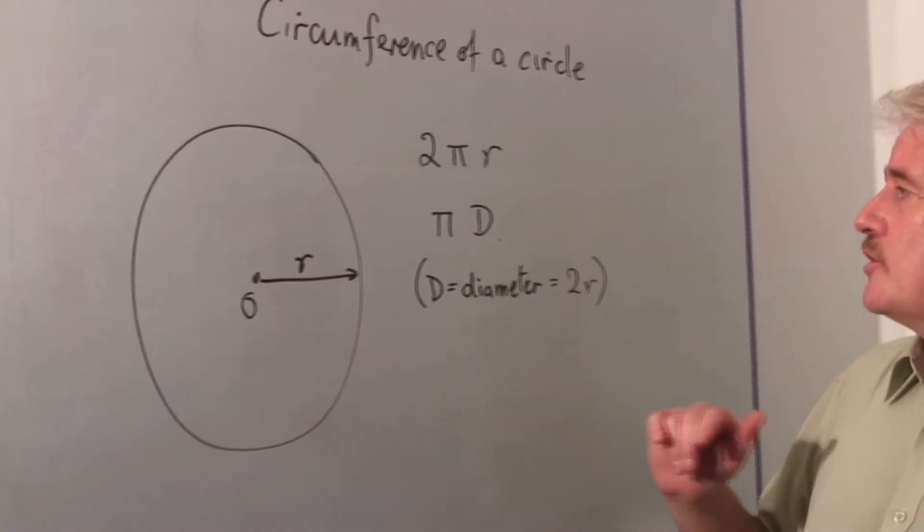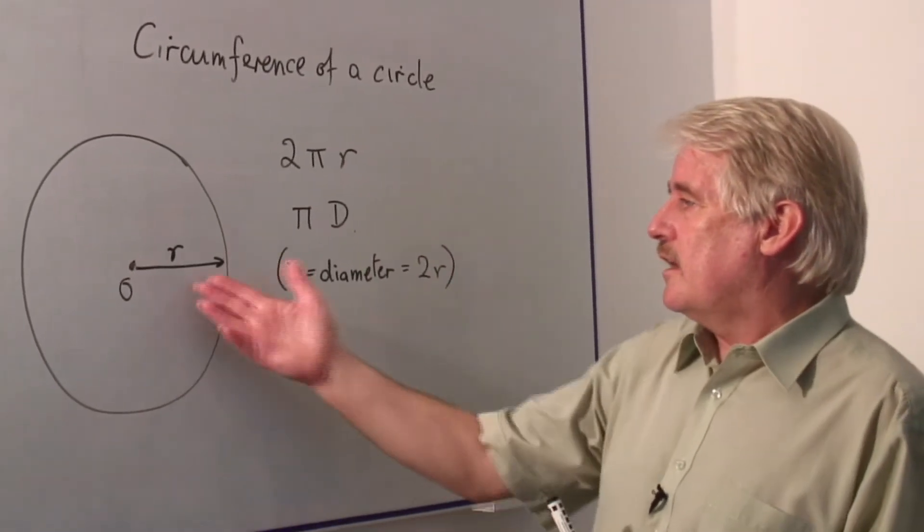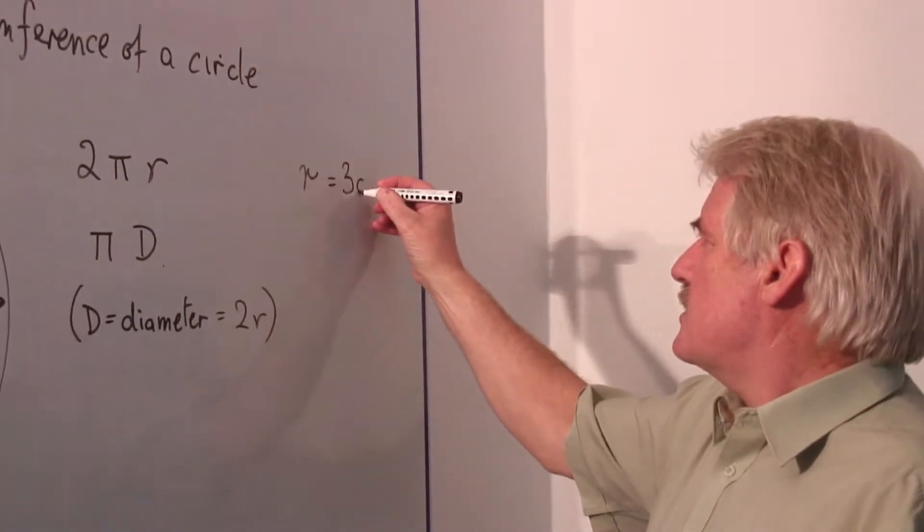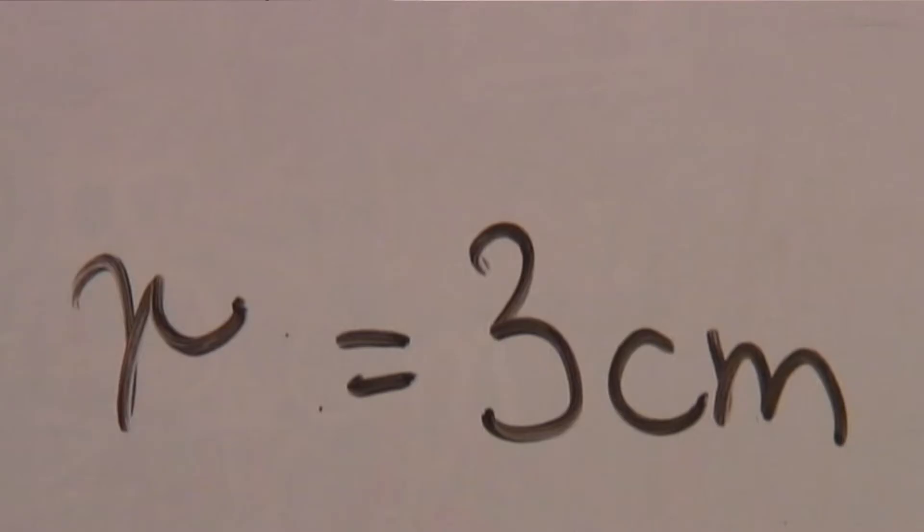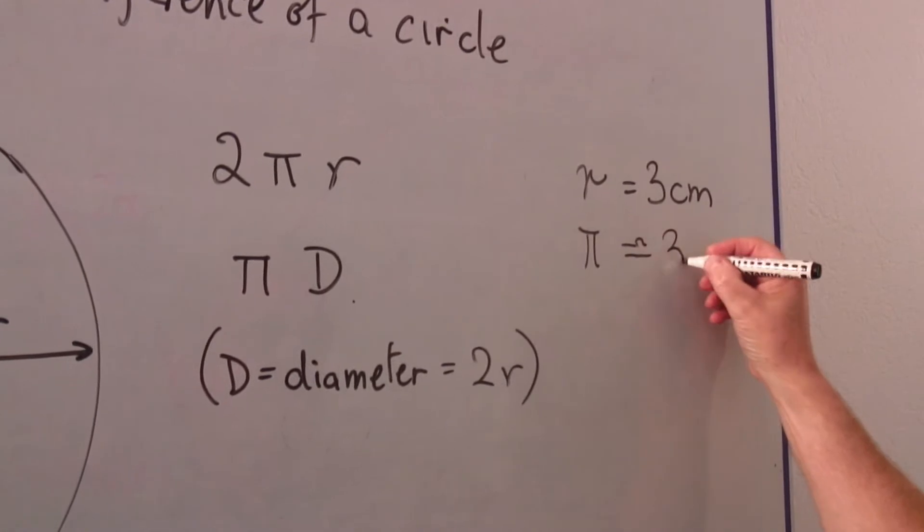So all we have to do is put in the numbers into the formula. So if we put a radius of three centimetres, and pi of course as we know is approximately three, so we'll just put a value of three for it.